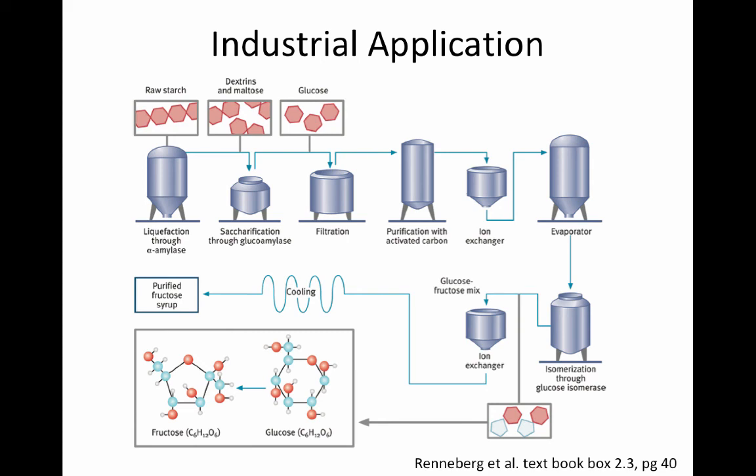The isomerase converts glucose into fructose — the same number of carbons, oxygens, and hydrogens, but now in the form of fructose, which is the desired sugar for this purified fructose syrup. After filtration, purification, evaporation, and a final cooling step, we have purified high-fructose corn syrup. Because of these enzymes, this process produces very inexpensive sugar — cheaper than sugar beets or sugar cane — which is why most corn you see while driving either goes to feed cattle or to make high-fructose corn syrup.